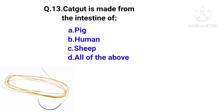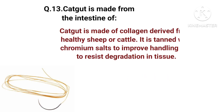Catgut is made from which animal? Options: pig, human, sheep, or all of the above. The right answer is option C — sheep. Catgut is made of collagen derived from healthy sheep or cattle. It is treated with chromium salts to improve handling and to resist degradation in tissue.